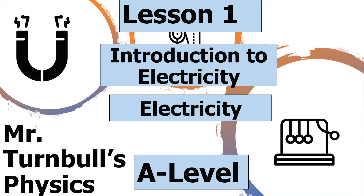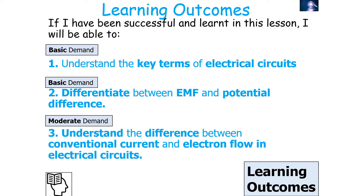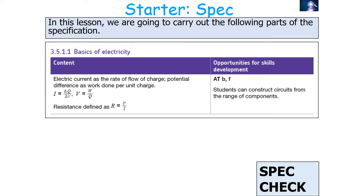Hello and welcome to this lesson on an introduction to electricity, which is part of the electricity topic in AQA A-level physics. In today's lesson we're going to look at defining the key words of electricity. We should be able to understand the key terms of electrical circuits, differentiate between EMF and potential difference, and understand the difference between conventional current and electron flow. We'll be covering AQA A-level physics specification 3.5.1.1, the basics of electricity.